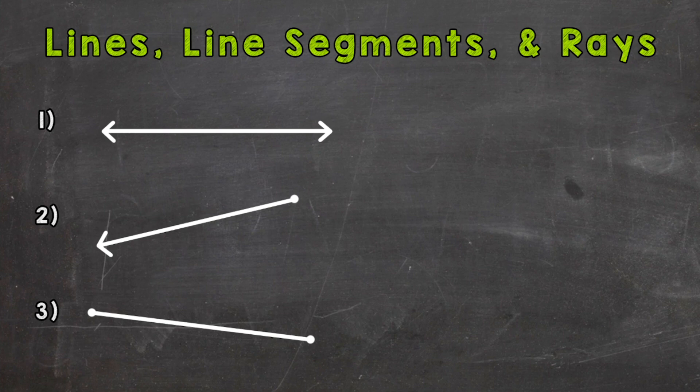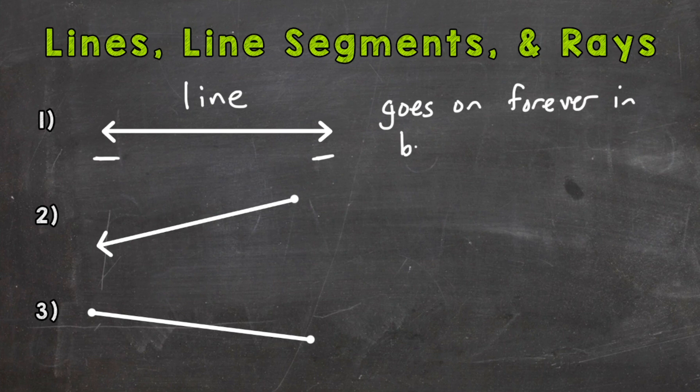Let's take a look at number one, and that's actually a line. A line in the geometrical sense goes on forever in both directions. These arrows here signify that the line goes on forever in both directions. I'll put some notes off to the side here. Goes on forever in both directions.